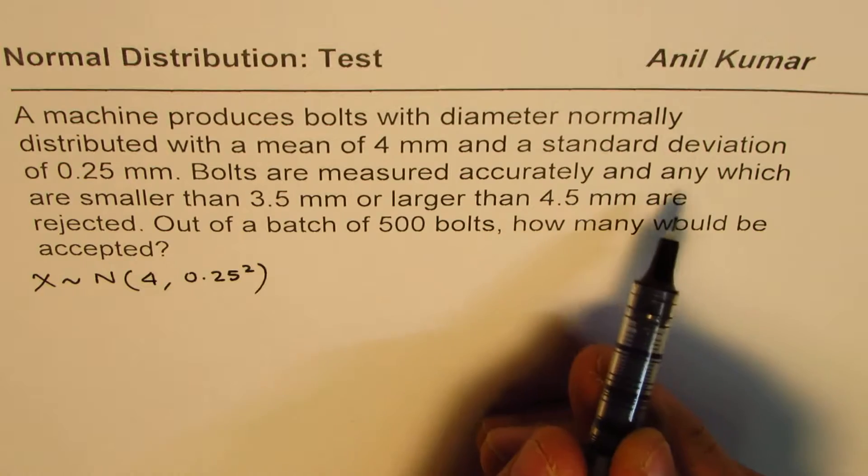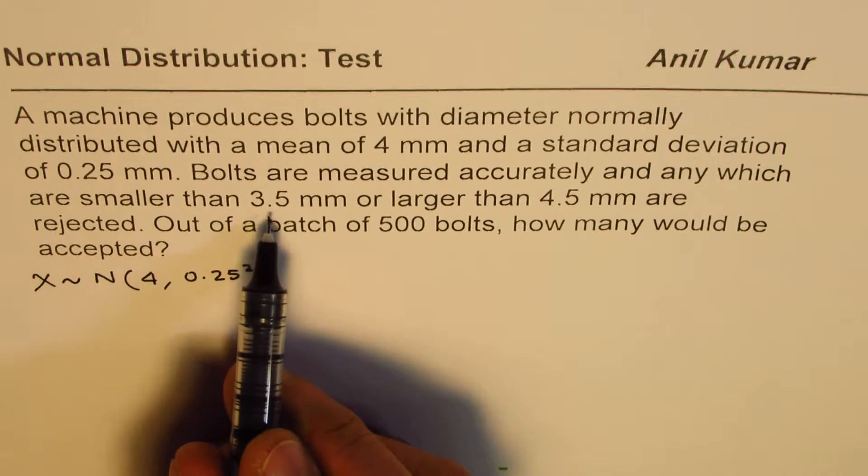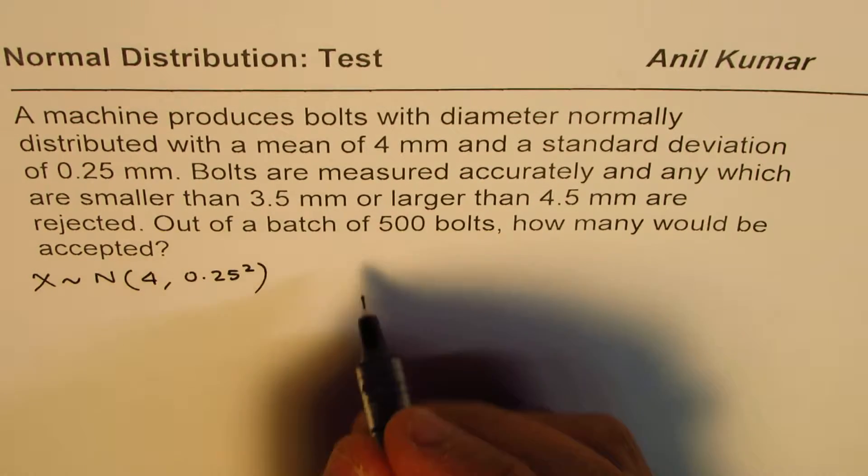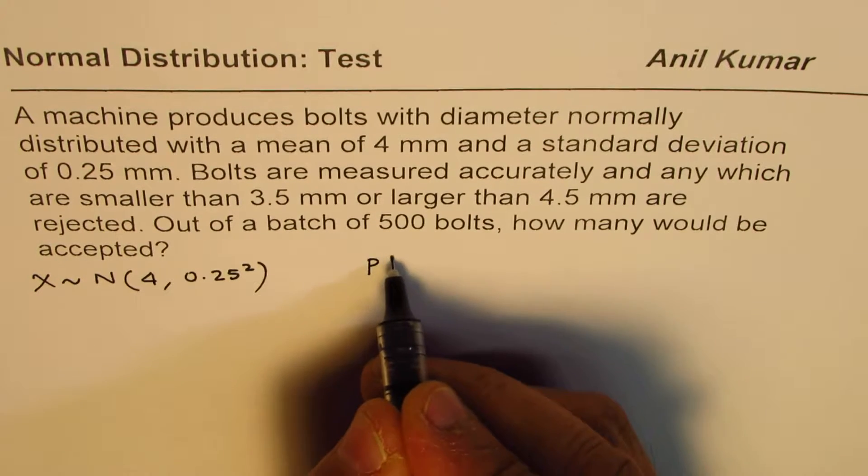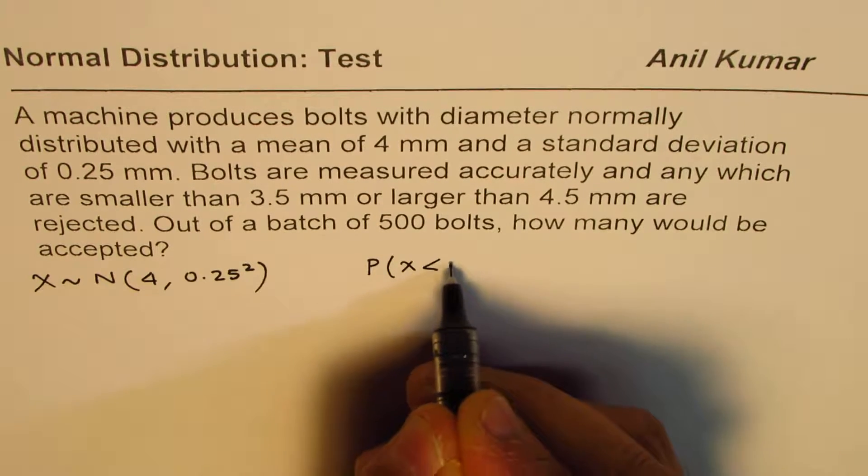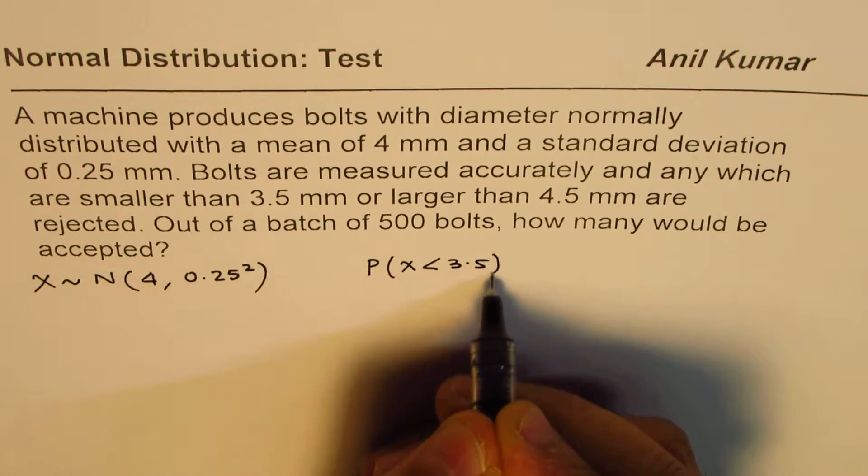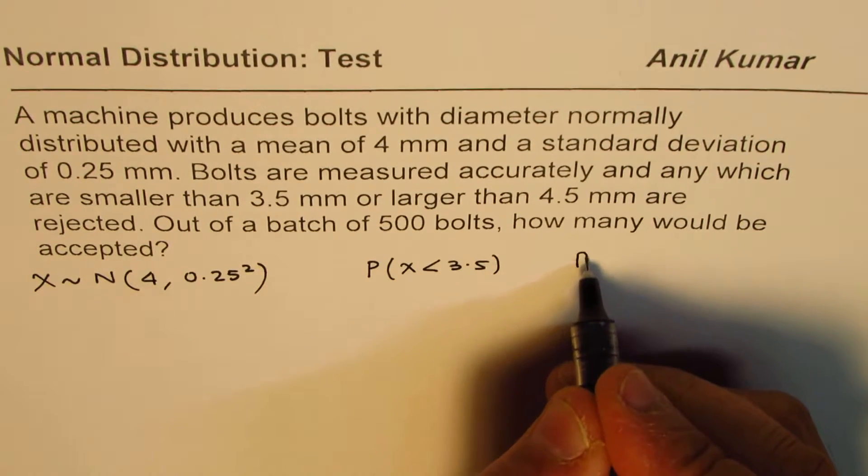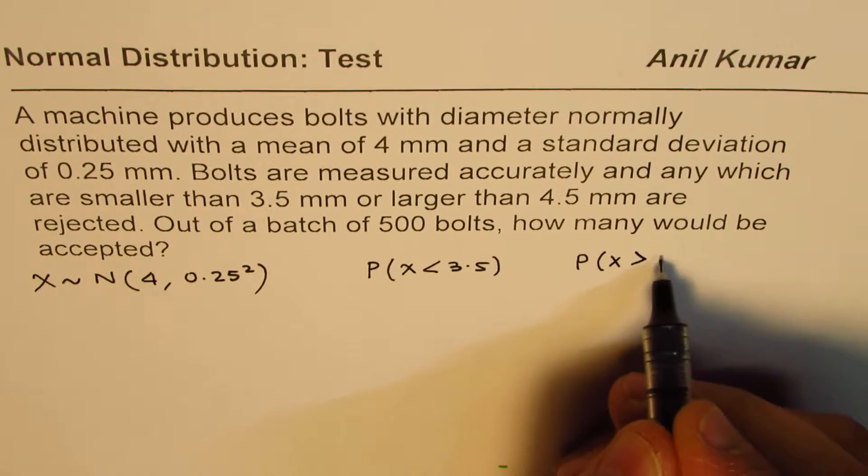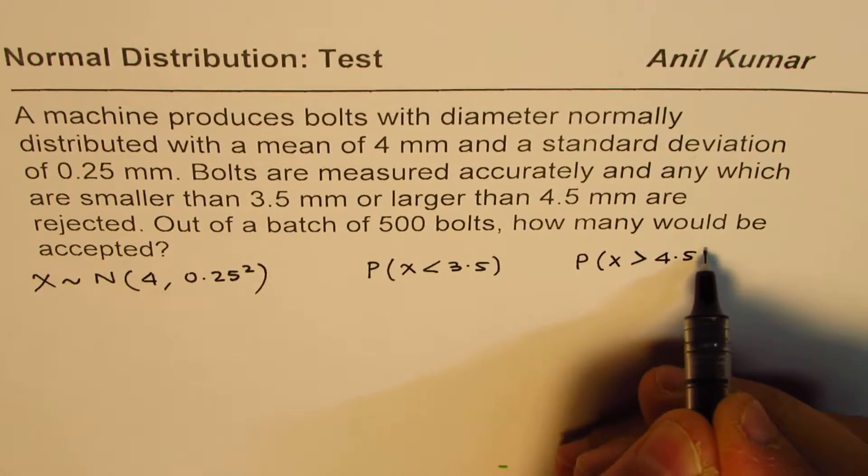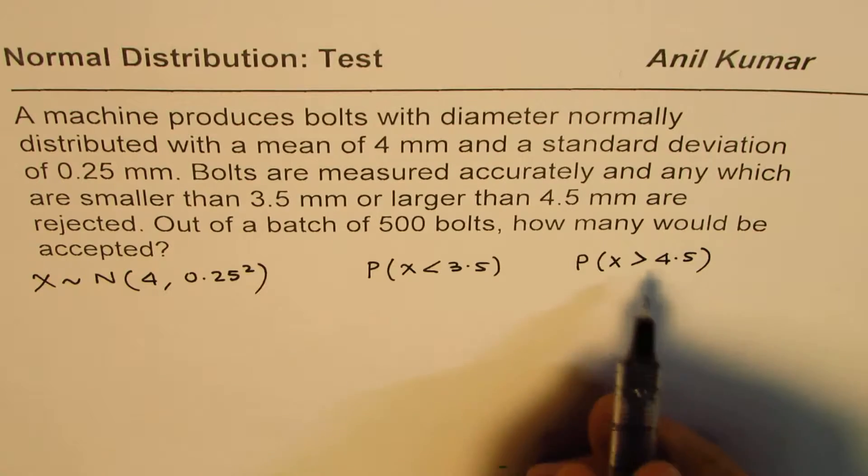Bolts are measured accurately and any which are smaller than 3.5, so we look for probability for those which are less than 3.5, or we look for probability for those which are larger than 4.5 millimeter are rejected.